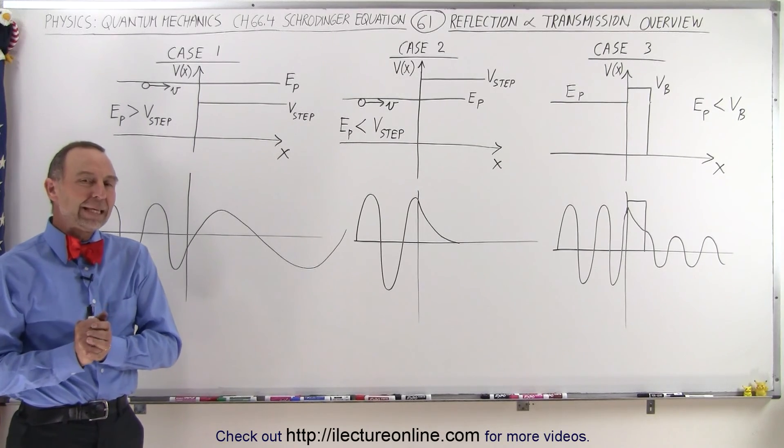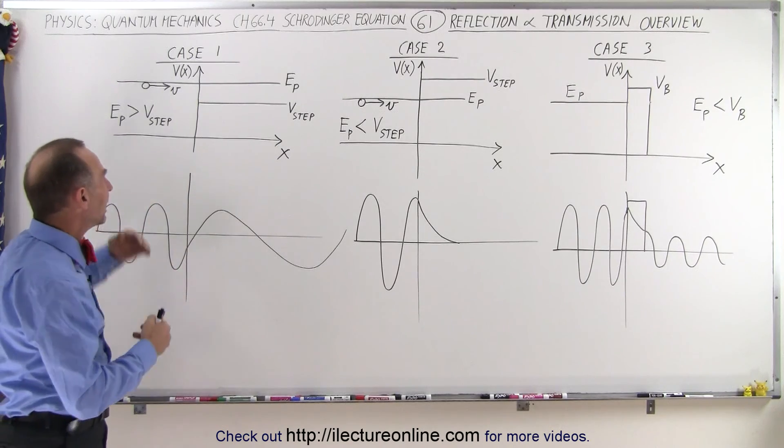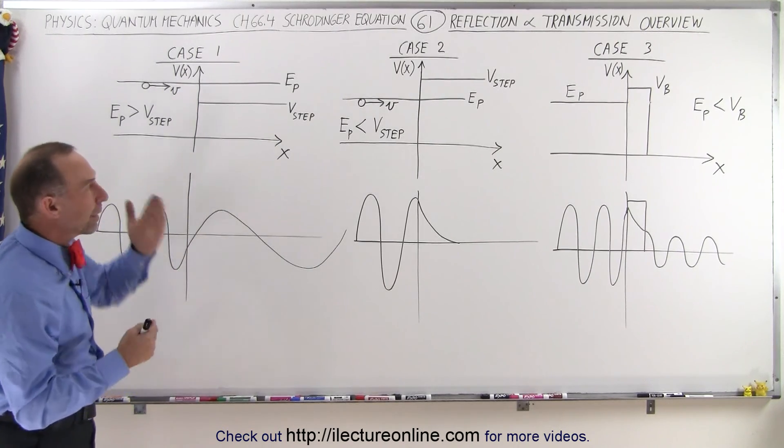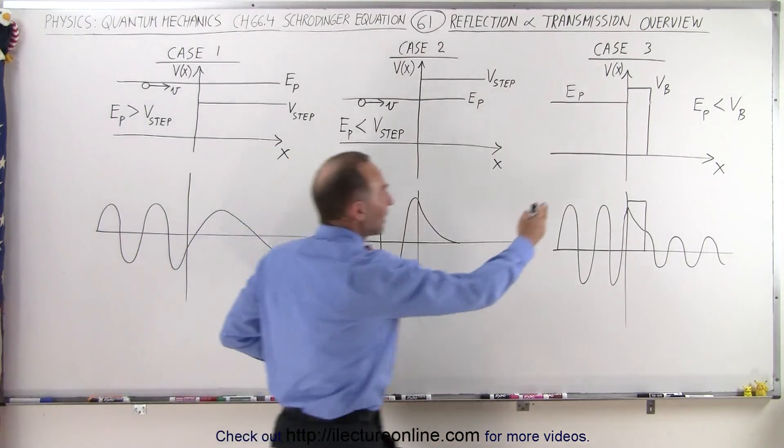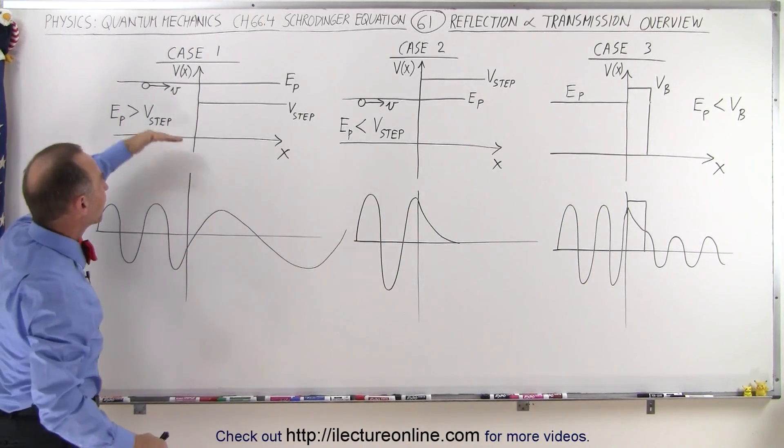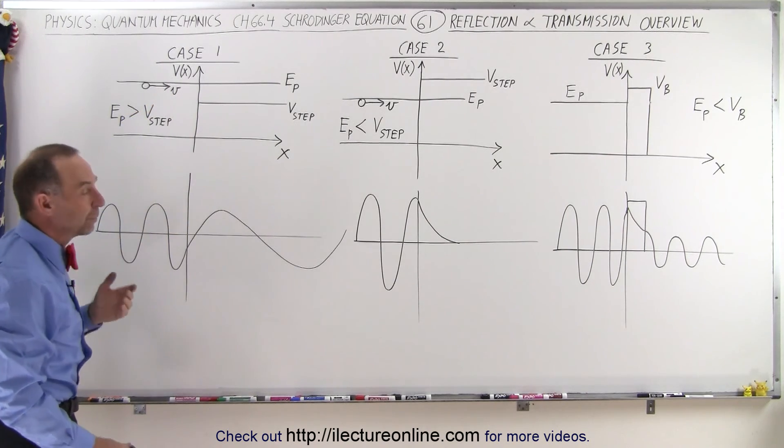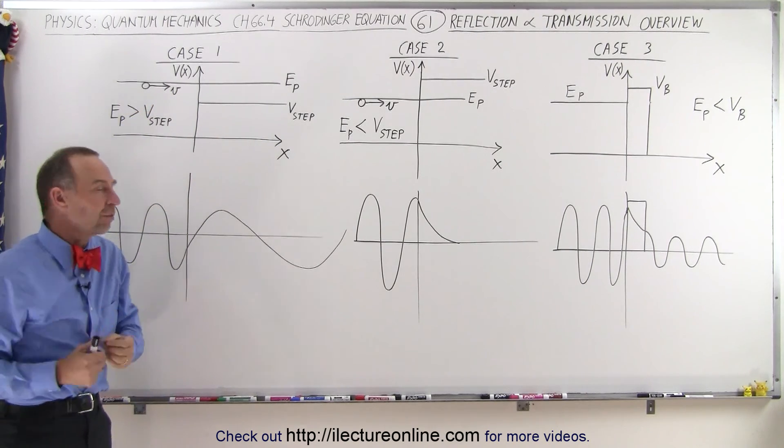Welcome to iLectureOnline. Here we're going to talk about how a particle reacts when it comes upon either a barrier, a temporary barrier like we have in case 3, or an increase in the potential, like a step up in the potential that it must overcome. In that case, there's two possibilities.